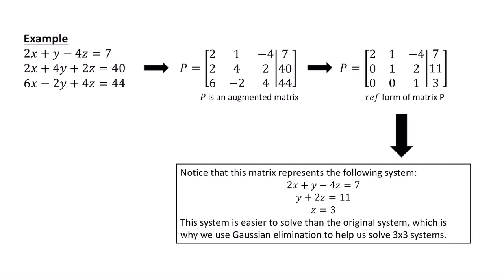The reason is that if we take our row echelon form and write out the corresponding system of equations, it's a much simpler system. The first column represents coefficients of x, the second column coefficients of y, and the third column coefficients of z. The first equation is the same: 2x plus y minus 4z equals 7. Row 2 has a zero coefficient for x, so we just have 1y plus 2z equals 11. And the third equation simplifies to just z equals 3, which gives us the value of one variable directly.